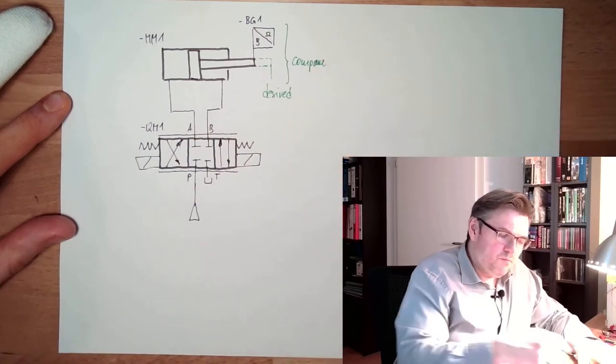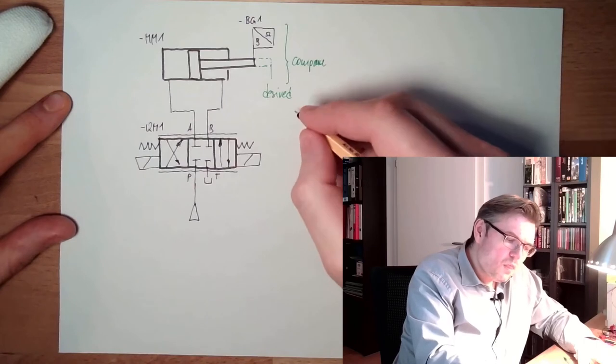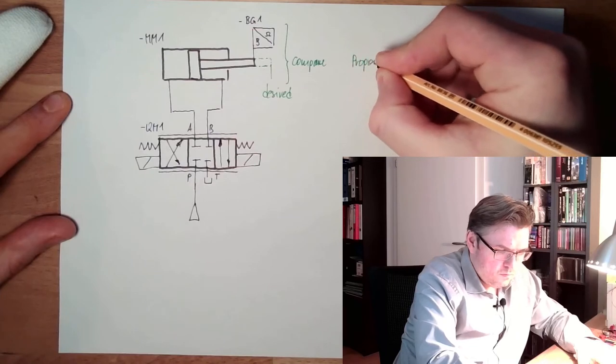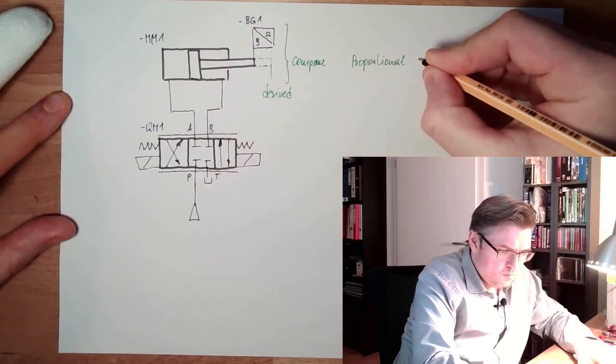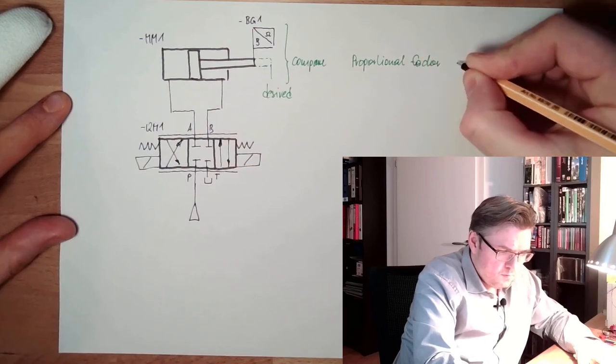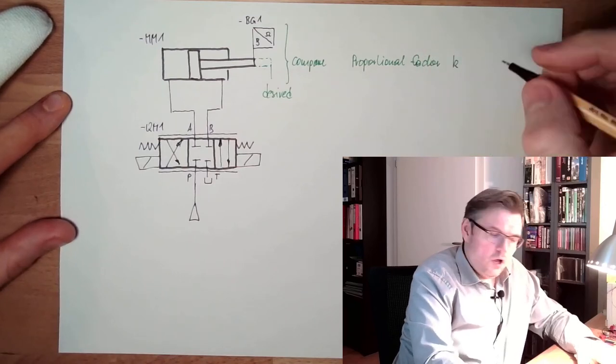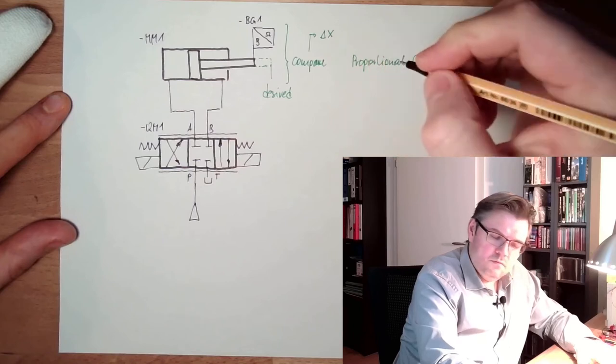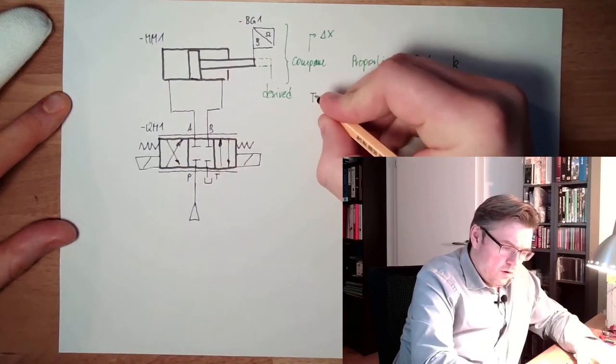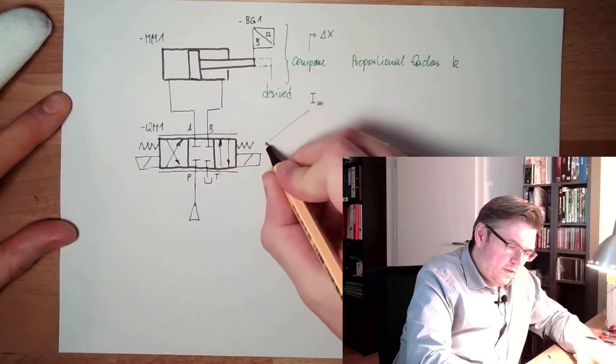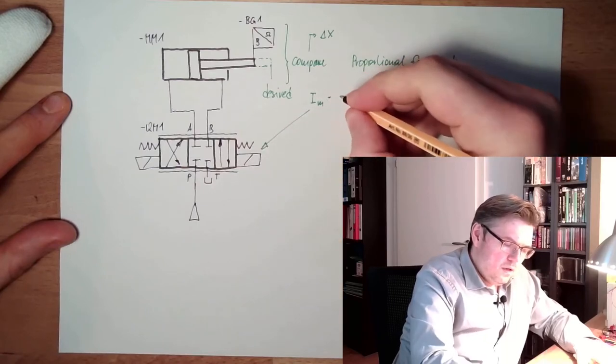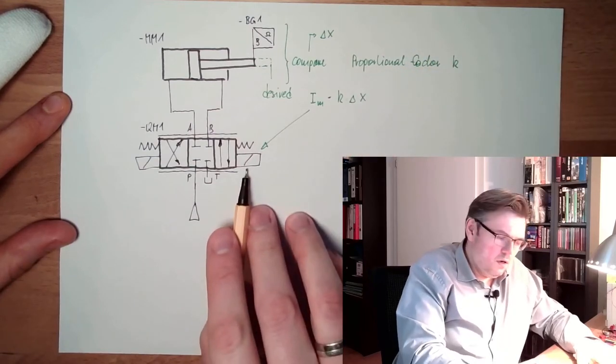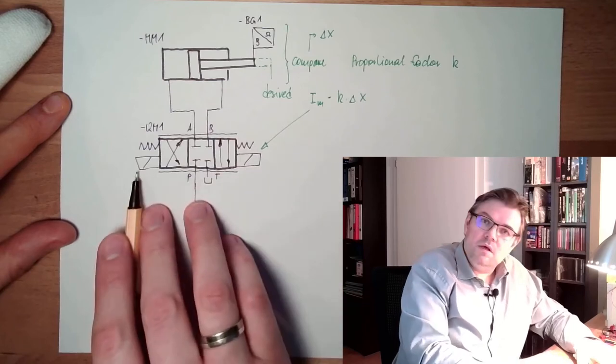So here we do a compare. Whatever comes out of this compare, plus or minus, we multiply with proportional factor. So this is compare, so we have a delta x. And our magnetizing current here is k multiplied by delta x. If the magnetizing current is positive I will put it here, if the magnetizing current is negative I will put it here.